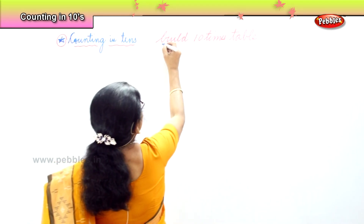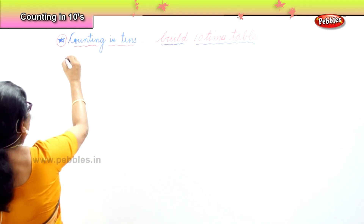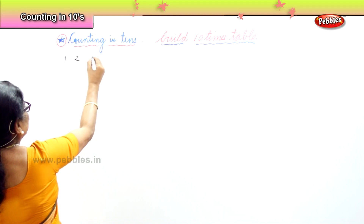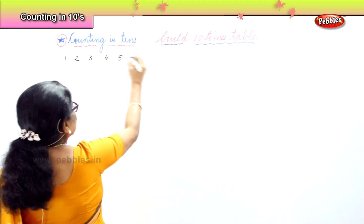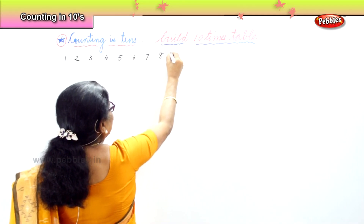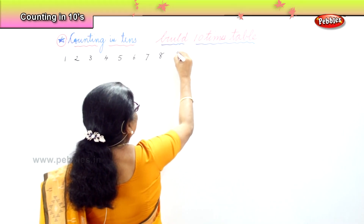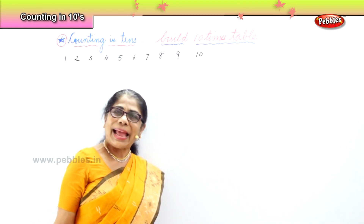It's very easy to build a 10 times table. All we need to do is write numbers 1 to 10. Look — 1, 2, 3, 4, 5, 6, 7, 8, 9, and 10. Just like we did for 2 and 5, we write all the numbers.